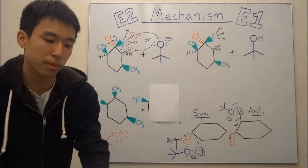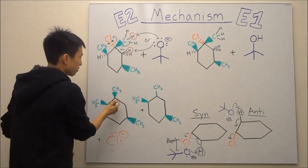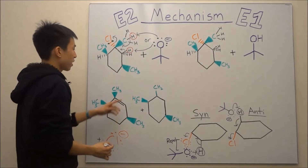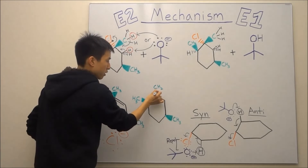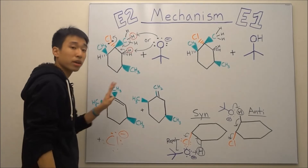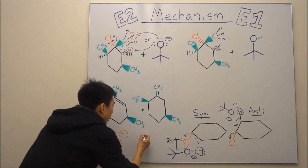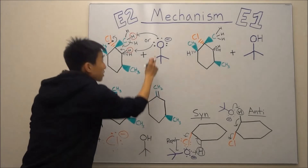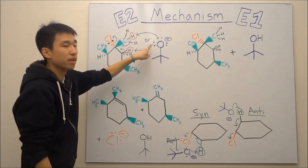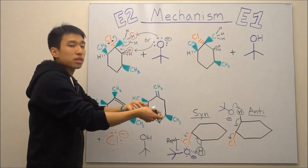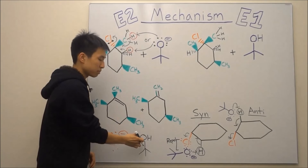So now you can see the products for the E2 mechanism. If we attack this hydrogen, we form a double bond right over here. And if the base ended up grabbing the other hydrogen, the double bond forms over there and the chlorine is gone. So those are your two products for the E2 reaction. You also get a chlorine minus. And your tert-butoxide becomes tert-butanol because it grabbed the hydrogen, so now there's a hydrogen on it. It gave up electrons — the tert-butoxide shared electrons to form a bond, and your molecule loses that negative charge and becomes neutral.